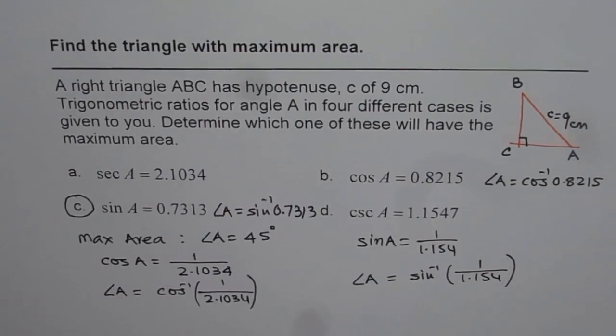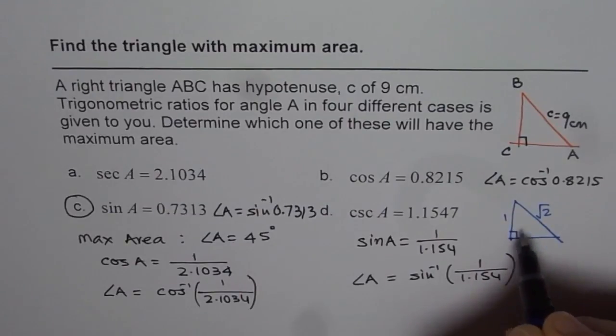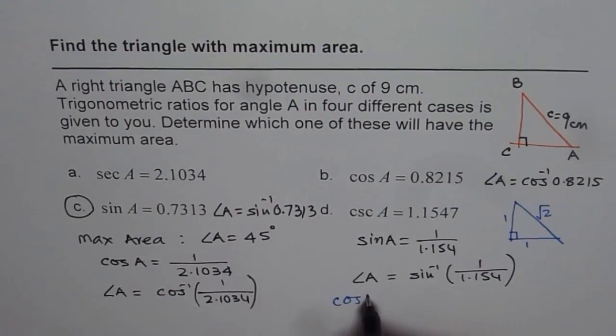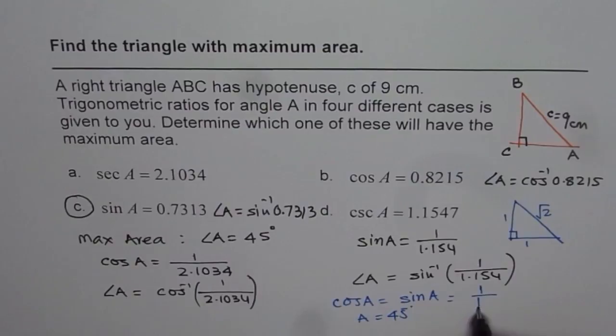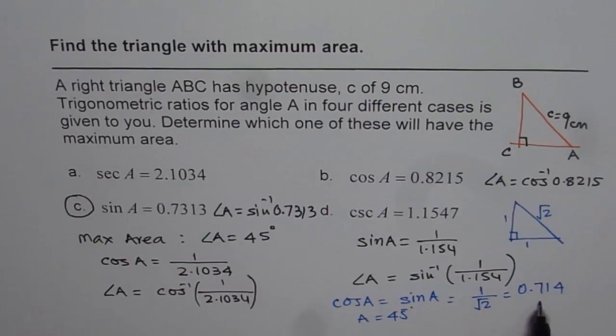45 degrees triangle is the one in which the sides are in the ratio of 1, 1, square root 2, correct? So sin A or cosine A for this triangle, even cosine A, is equal to sin A, I am saying A equals to 45 degrees, 1 over square root 2, right? Which is 0.714. So this seems to be closest to 0.7, right? And therefore, angle A will be closest to 45 degrees. And that becomes our answer.